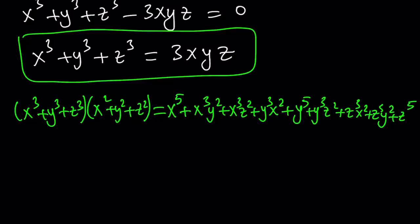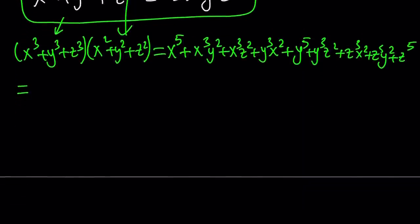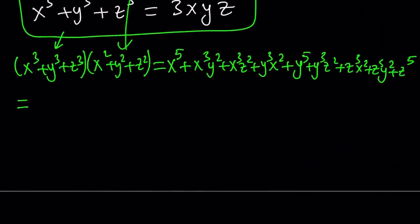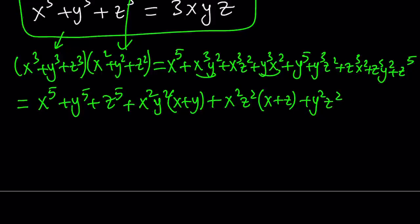And then z cubed x squared plus z cubed y squared, and finally z to the fifth power. I have the sum of cubes and squares, and I want to distribute the right-hand side first. Later I'm going to replace the sum of cubes with something, and also use the sum of squares. So let's simplify the right-hand side: we get x to the fifth plus y to the fifth plus z to the fifth. Then I group x cubed y squared with y cubed x squared — factor out x squared y squared to get x plus y. Similarly, x squared z squared times x plus z, and y squared z squared times y plus z.